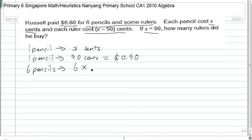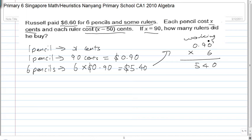Now if he bought 6 pencils, so 6 pencils must equal 6 times $0.90, and that equals $5.40. Let's just do the working here. 0.9 times 6: 6 times 0 is 0, 6 times 9 is 54. Since there are two decimal places, you bounce once, you bounce twice, you put the decimal place here and your answer is $5.40.